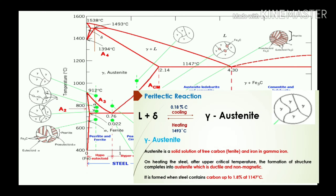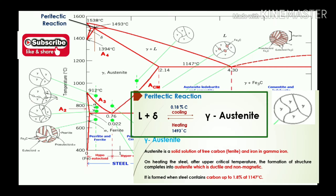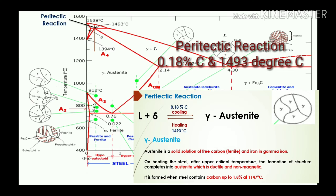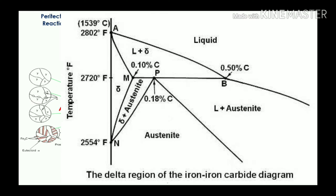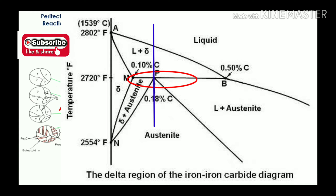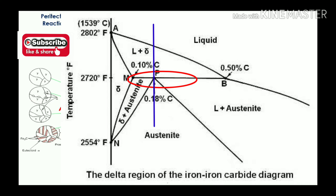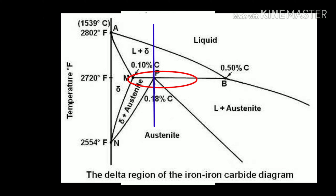Let's start with the first reaction, which generally occurs at higher temperatures and low percentage of carbon. You can see 0.18 percentage of carbon and the temperature of 1493 degrees centigrade — that is called the peritectic reaction. In the peritectic reaction, liquid plus delta phase converts into gamma austenite phase.